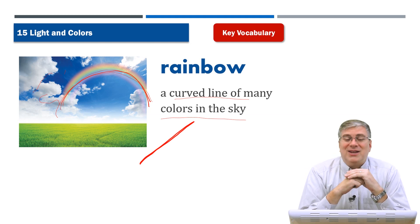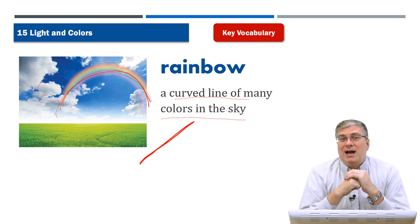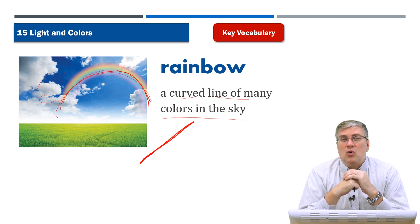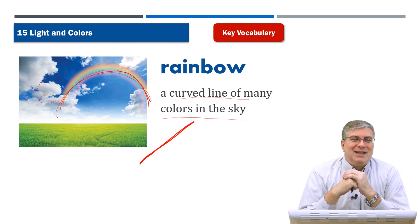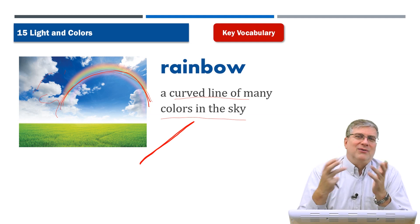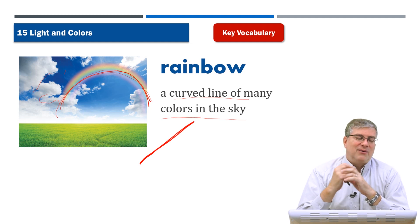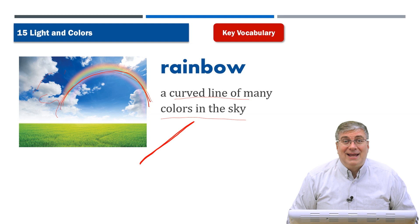Of course you can never go up and catch the rainbow. There's a legend that a leprechaun — a magical being from Ireland — has buried a pot of gold at the end of a rainbow. But of course that's just a legend. You can never catch the rainbow and you'll never get that pot of gold. It's just a funny story. Okay, those are our words for today.